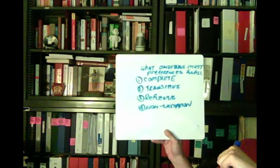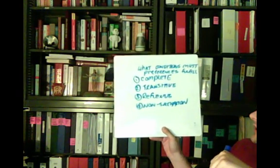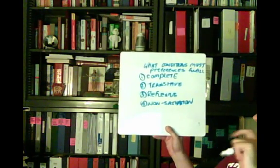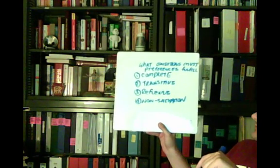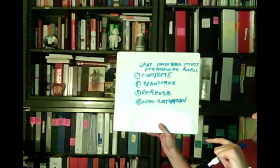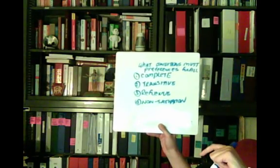What conditions must preferences fulfill? They must be complete, transitive, reflexive, and have the property of non-satiation. For preferences to be complete, basically what that means is that all bundles have to be able to be compared to one another. There are only three types of relationships that can exist between two bundles — for example, a bundle containing a quantity of Crest toothpaste and a quantity of sushi.